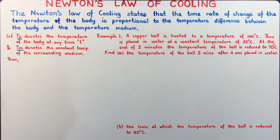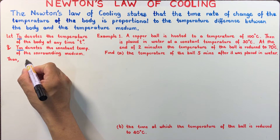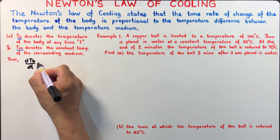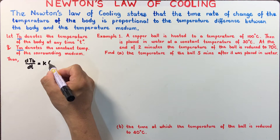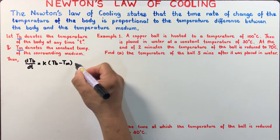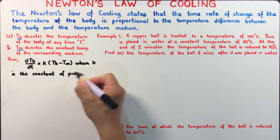To model Newton's Law of Cooling, let T sub B denote the temperature of the body at any time T, and T sub M denote the constant temperature of the surrounding medium. Note that the temperature of the surrounding medium is constant. We can then write mathematically that the differential of T sub B with respect to time is equal to some constant K times the difference of T sub B and T sub M, where K is the constant of proportionality.